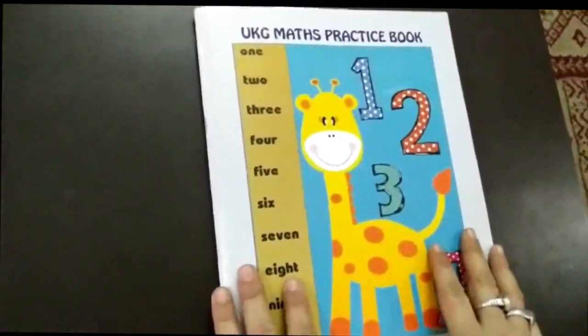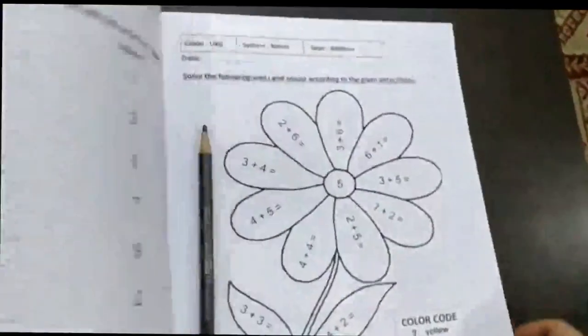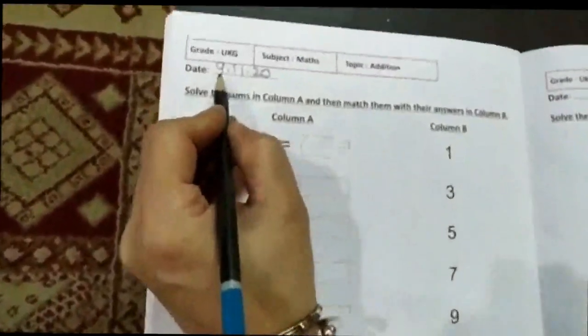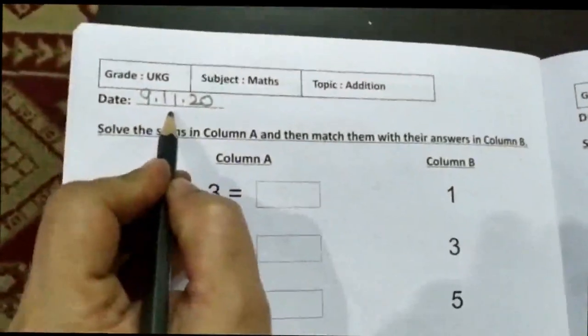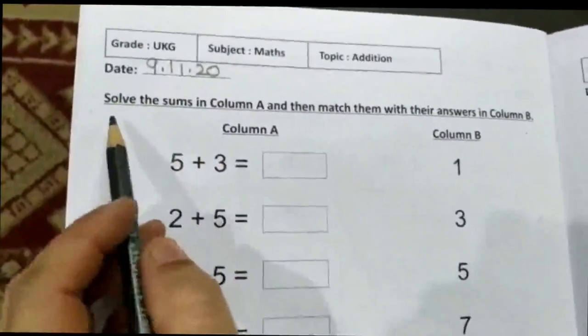Now take your maths practice book and open to page number 56. Write today's date, 9th of November 2020. Let's read the instructions.